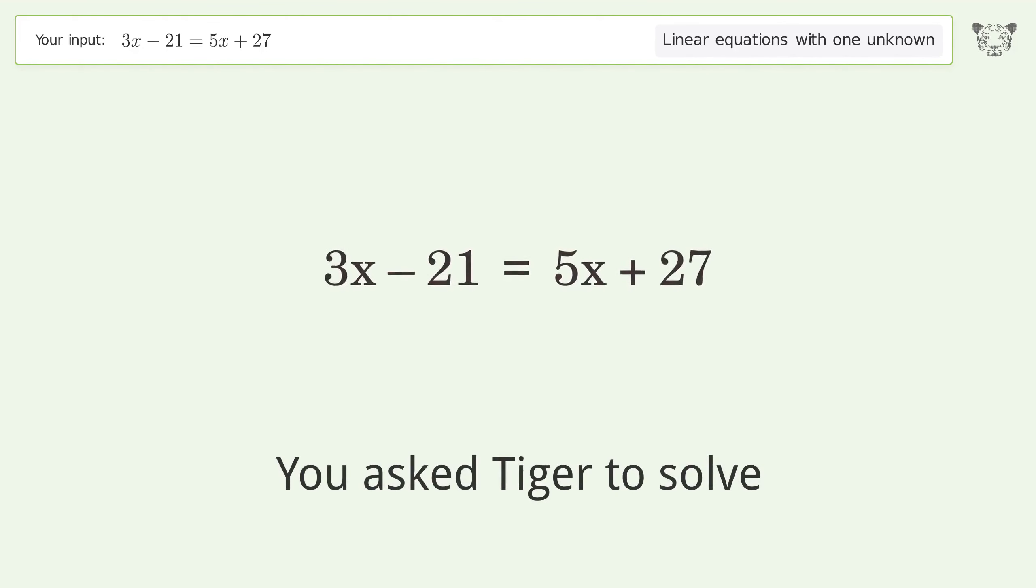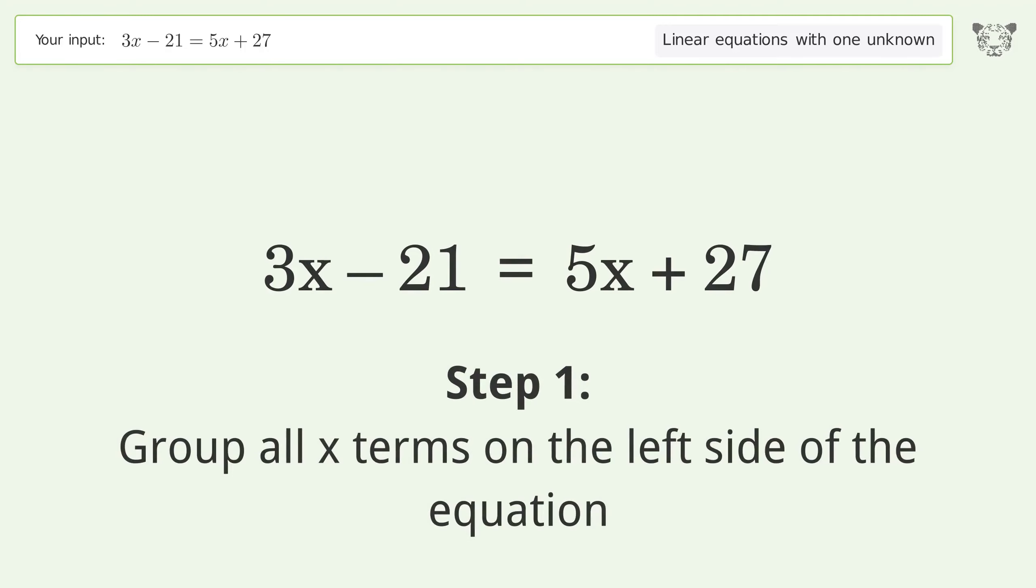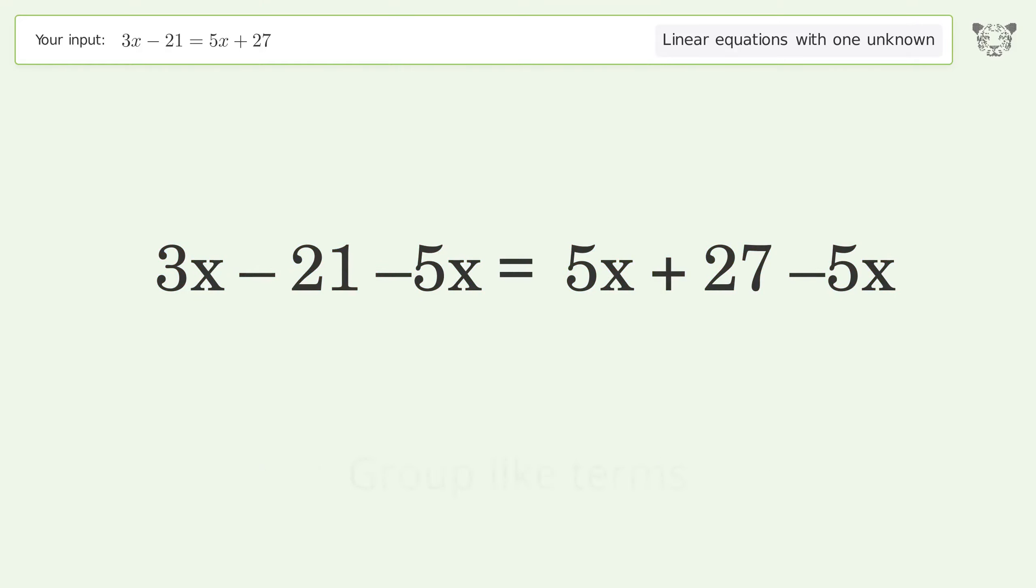You asked Tiger to solve this. It deals with linear equations with one unknown. The final result is x equals negative 24. Let's solve it step by step. Group all x terms on the left side of the equation. Subtract 5x from both sides. Group like terms.